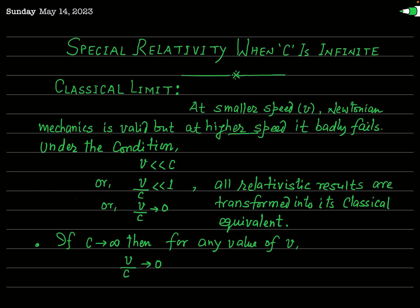If the speed of light were infinite, it would mean that objects could move from one point to another instantaneously — no time would be taken by an object to move from one point to another. In such a scenario, the principles of special relativity, which are crucial for understanding relativistic effects at high speeds, would become irrelevant. How it becomes irrelevant can be seen through the idea of the classical limit.